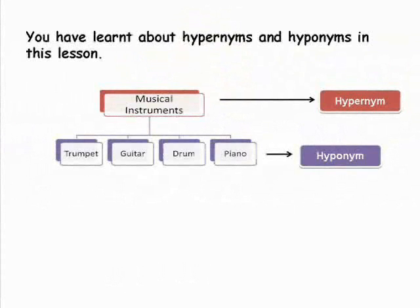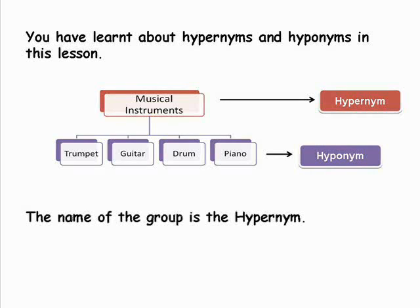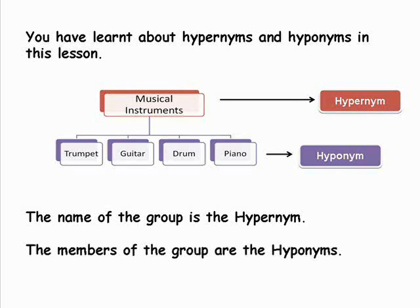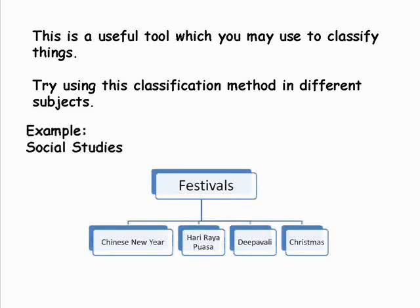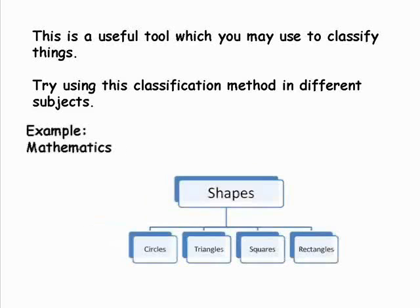We have come to the end of this lesson. Before we end, let us think about what you have learnt. You have learnt that hypernyms are the names of a group and hyponyms are the members of the group. This is a useful tool which you may use to classify things. Try using this classification method in different subjects, for example in Social Studies or in Mathematics. That's all for today. Bye-bye.